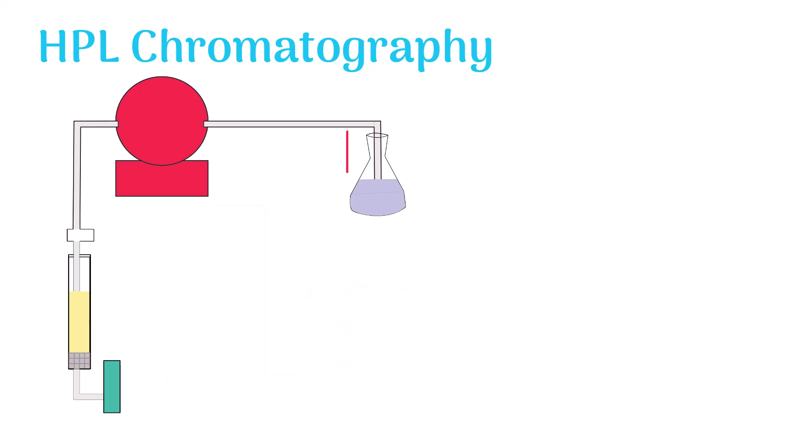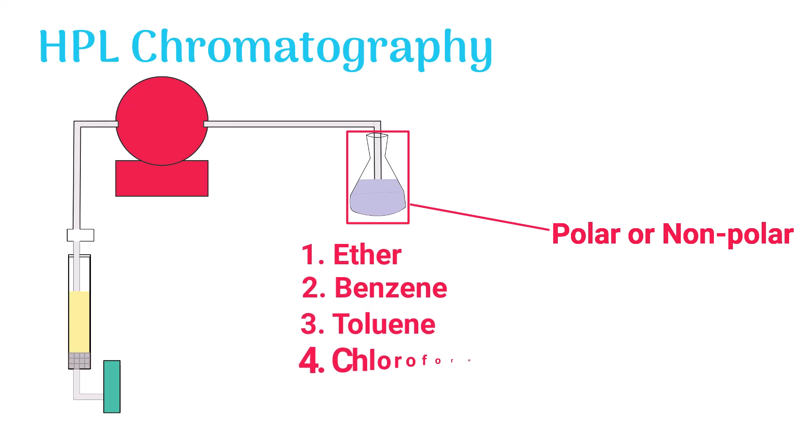The solvent can be polar or non-polar depending on the nature of mixture molecules. Different solvents are used as mobile phases in HPL chromatography like ether, benzene, toluene and chloroform, etc.